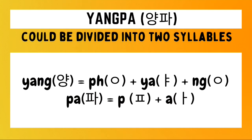How do you write YANG PA in Hangeul? To write the syllable YANG, we need to draw first a placeholder or a no-sound character, followed by the YANG character. The second syllable PA requires a P character followed by an A character. We then combine the Hangeul for each syllable to form the Hangeul of the word YANG PA.